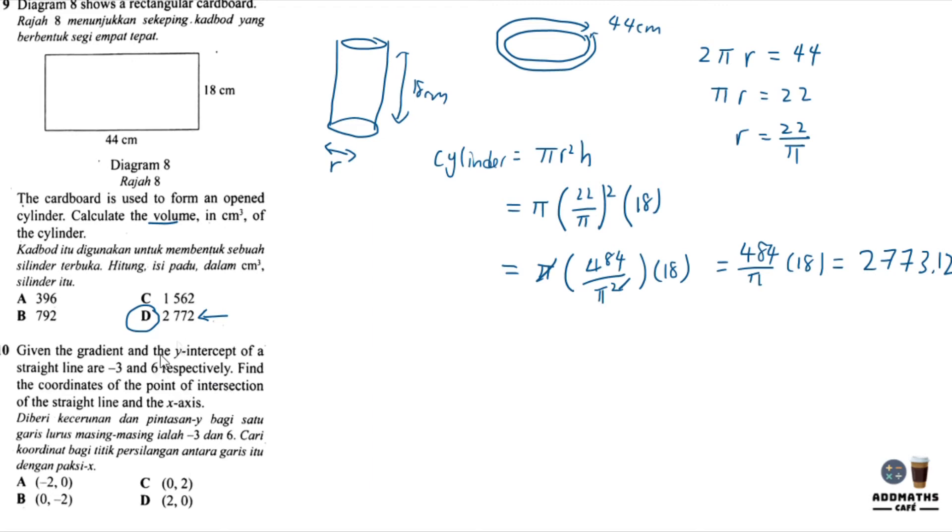Question 10: Given the gradient is -3 and the y-intercept is 6, find the coordinate of the point of intersection of the straight line. This is a straight line, so let's make it into a straight line equation: y = mx + c. We know m is -3x and c is 6. This straight line intersects the x-axis.